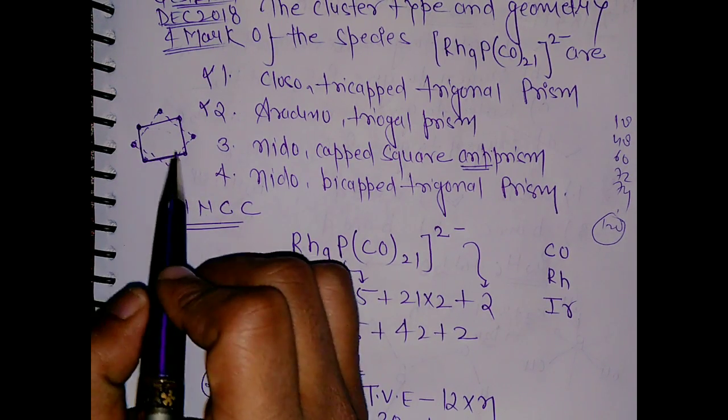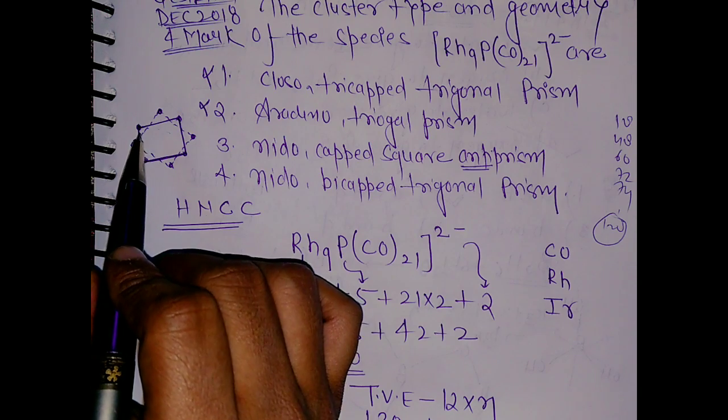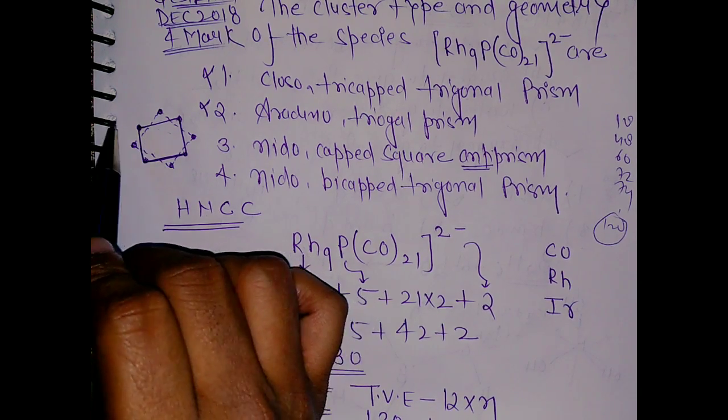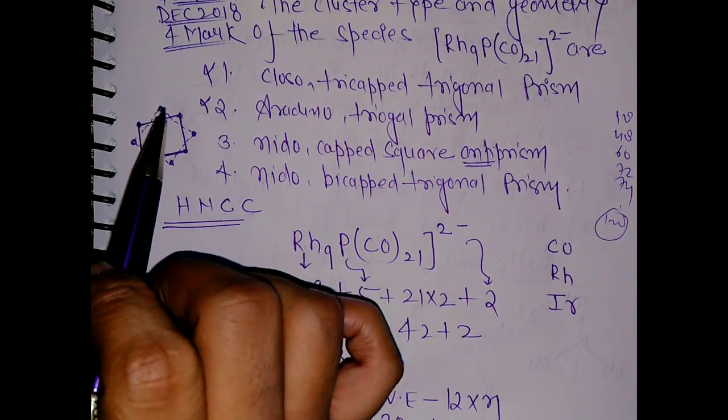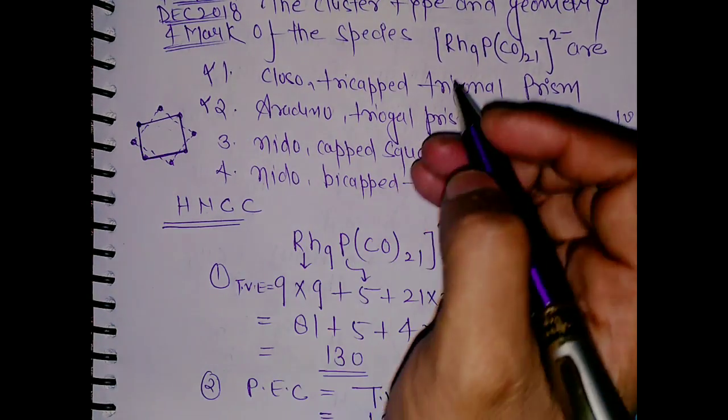But here these two faces are anti to each other, like in staggered form. So the ninth one will be in between these two square faces. So we have got this square antiprism.